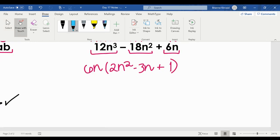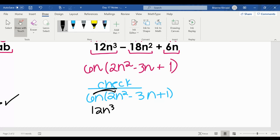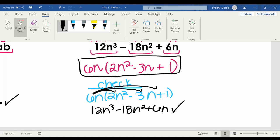So now that I have my placeholder, we can check. 6n times 2n² is going to give us 12n³. 6n times negative 3n is negative 18n². And then 6n times 1 is positive 6n. Remember, the checking is so important because of that key mistake that I just showed you. If you don't check, you probably wouldn't have realized that was an issue. We see that they match. We see that we factored correctly.